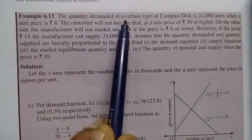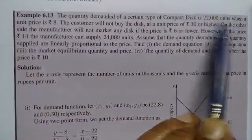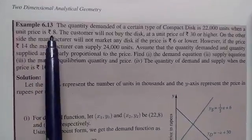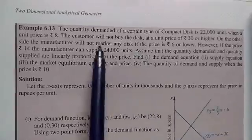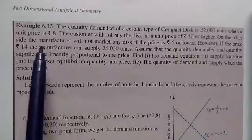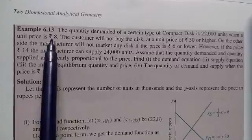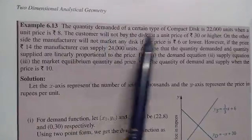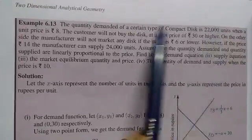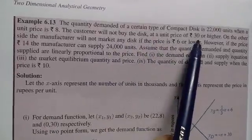The quantity demanded of a certain type of compact disc is 22,000 units when the unit price is Rs.8. The demand is zero when price is Rs.20, and the customer will not buy the disc at a unit price of Rs.30.